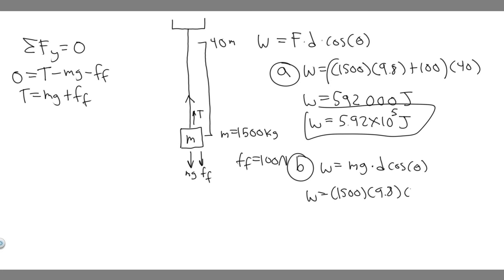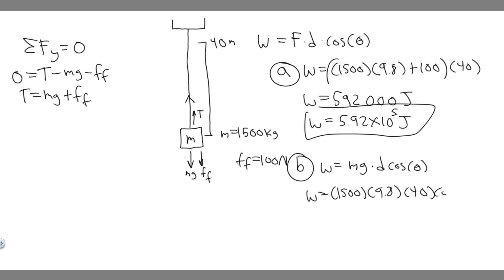This is where the problem differs a bit. The cosine of theta — keep in mind the gravitational force is going down but the elevator is traveling upward. Looking at it, it goes straight up while the force goes down. The angle between two lines going in opposite directions on top of each other is 180 degrees. So we multiply by cosine of 180, which equals minus 1. This means our work is actually going to be negative.